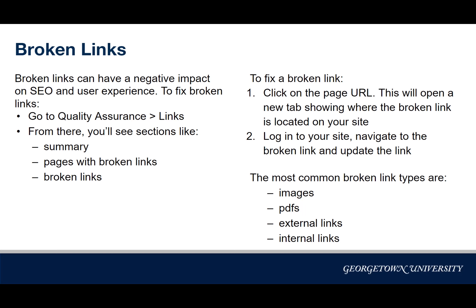To fix a broken link, the process is the same whether you're going page by page or link by link. You'll click on the link to the page that Siteimprove flagged — this opens a new tab showing the page and where exactly the broken link is located. From there, you'll need to log into your site on WordPress, navigate to that page, and update the link.